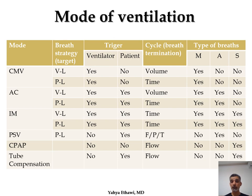In PSV, it is only pressure-limited — there is no volume-limited option, which is another difference from assisted control. The ventilator does not provide a trigger; only the patient controls the ventilator. In PSV, the cycle can be flow, pressure, or time. There is no mandatory breath unless you set a backup rate. There are only assisted breaths — the ventilator always assists and the patient drives the ventilator.